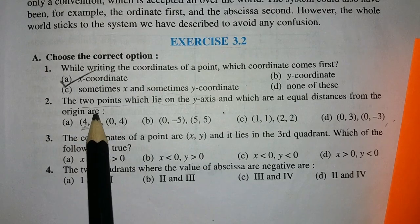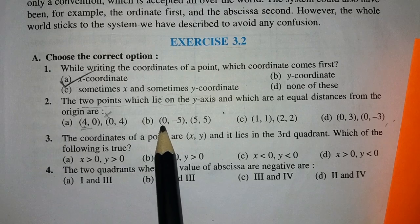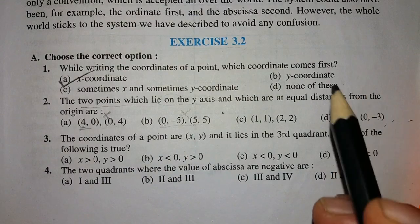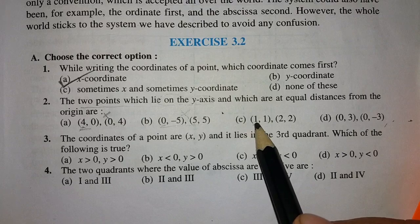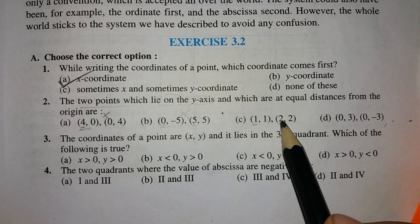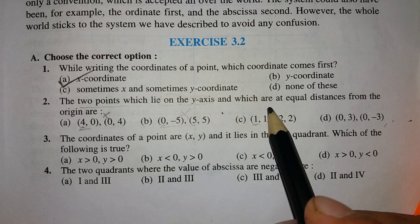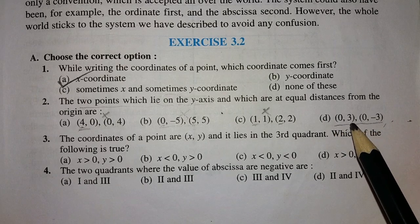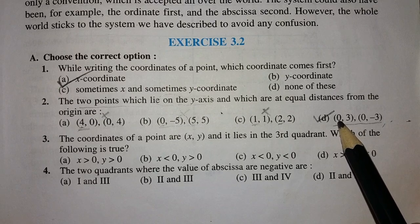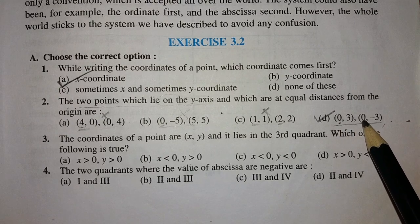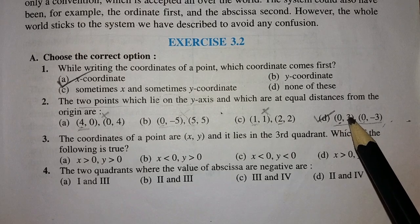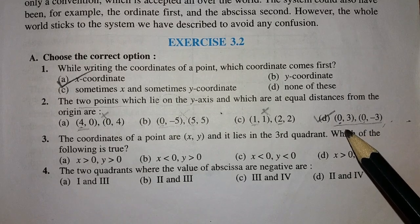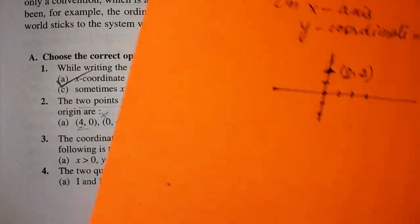Checking the options: in the first option, X coordinate is not 0, so it cannot be our answer. In the second option, one X coordinate is 0 but the other is not, so it's also wrong. In the third option, X coordinate is not 0. In the last option, both X coordinates are 0 — (0,3) is 3 units above the origin and (0,-3) is 3 units below the origin.